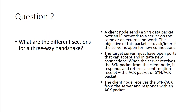What are the different sections for a three-way handshake? When you start out, you have an initial sync packet. The client will send a sync packet, the target server will send an acknowledgement packet, and then they are waiting for another ACK packet. Let me get a visual representation for this.